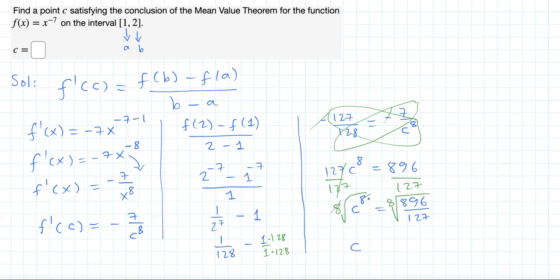Taking 8th roots on both sides of the equation to eliminate this exponent 8, we finally get C isolated. But don't forget, since this exponent is even, there's plus or minus.